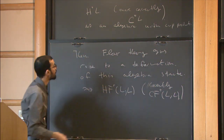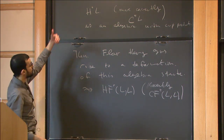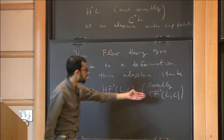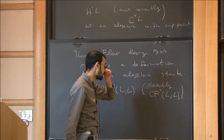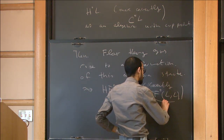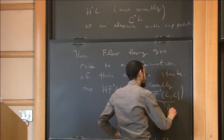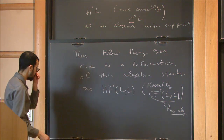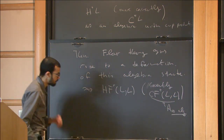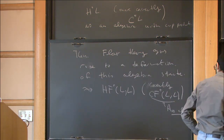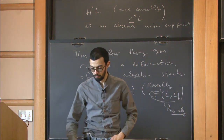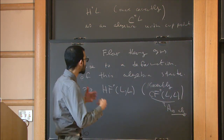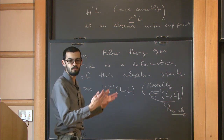There are some technicalities: the cochains form a differential graded algebra, but if you try to set this up, it doesn't work out nicely as a differential graded algebra — it turns out to be an A-infinity algebra. But that's not the primary concern; that's what it means that it's a deformation.